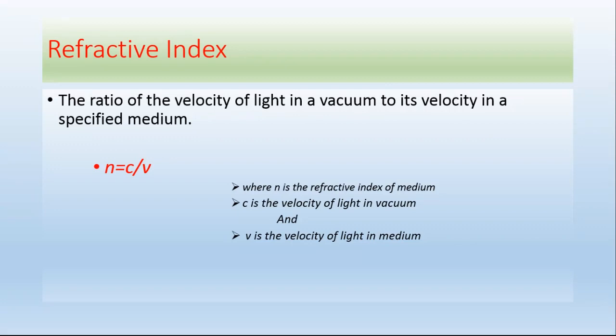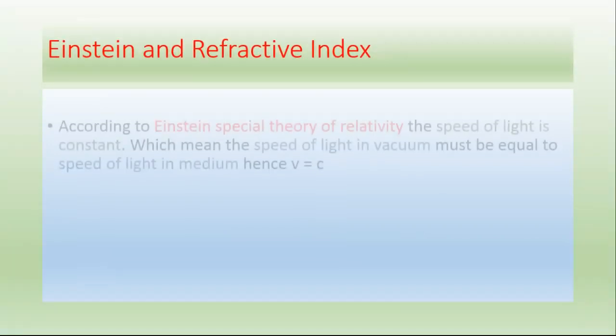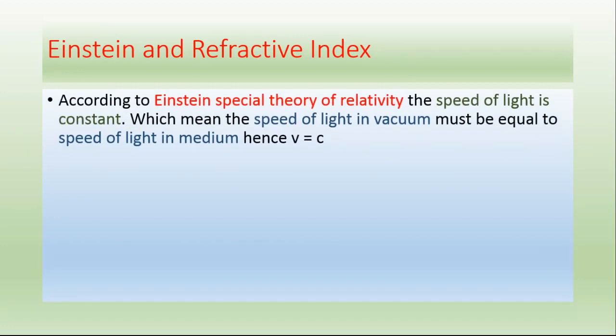According to Einstein's special theory of relativity, the speed of light is a universal constant, which means that the speed of light in vacuum must be equal to the speed of light in medium. Hence, V = C.